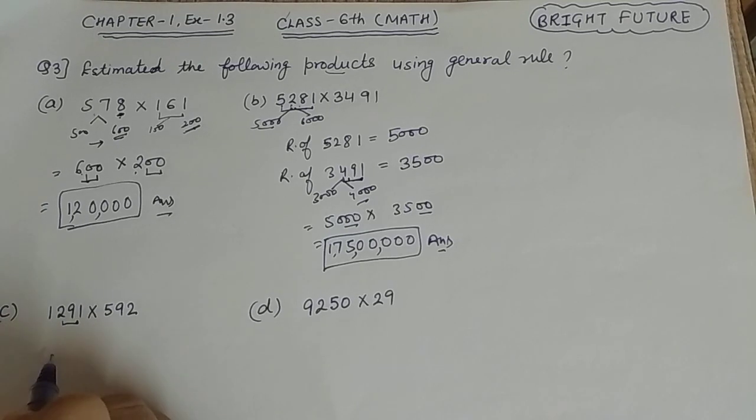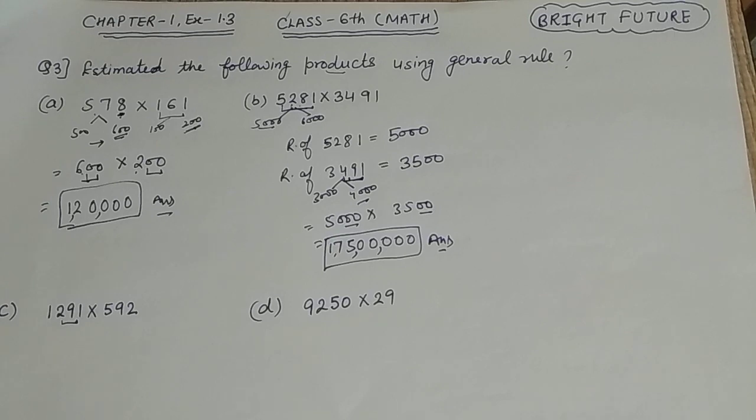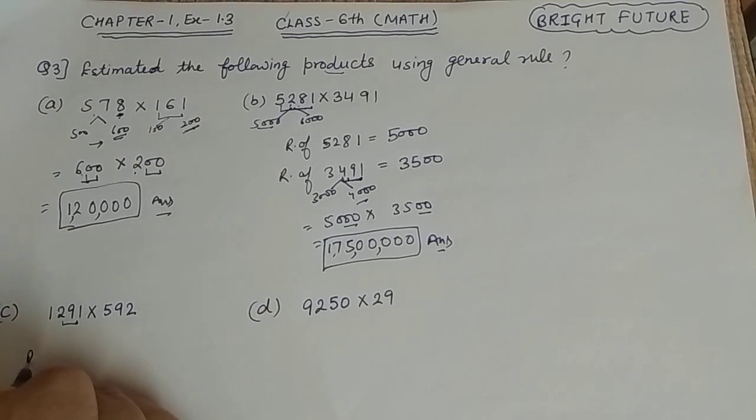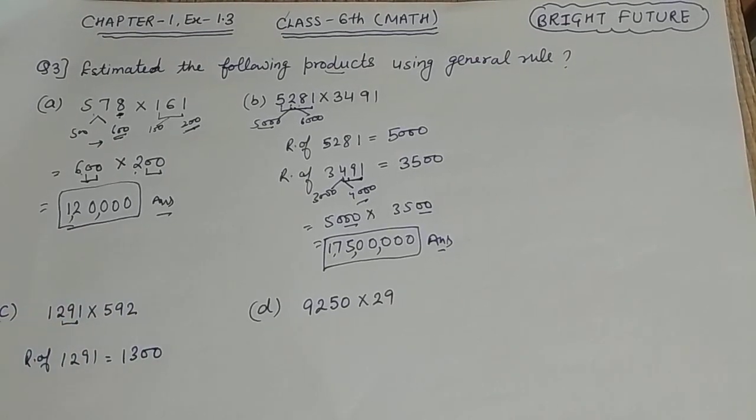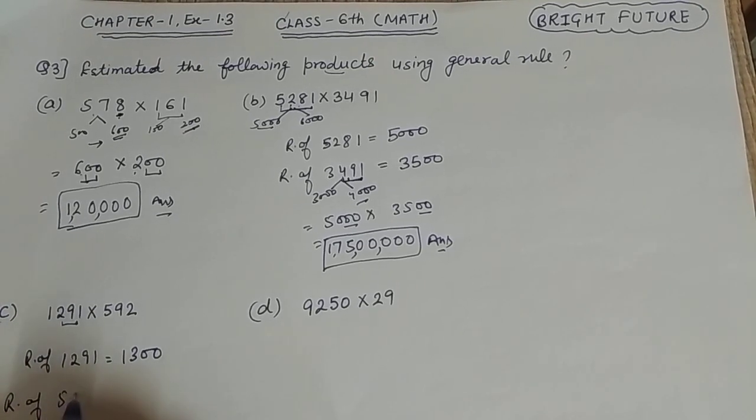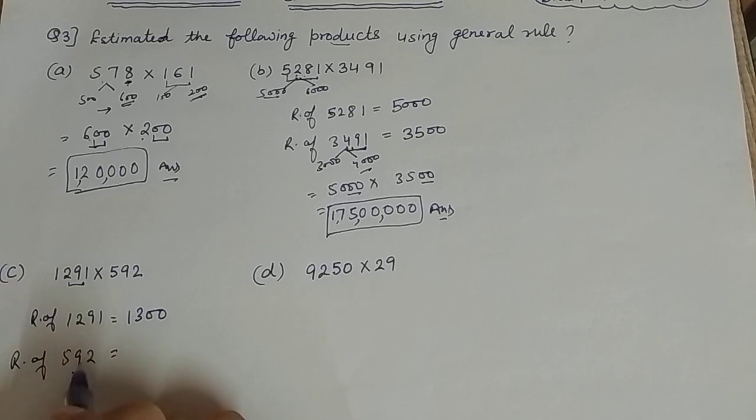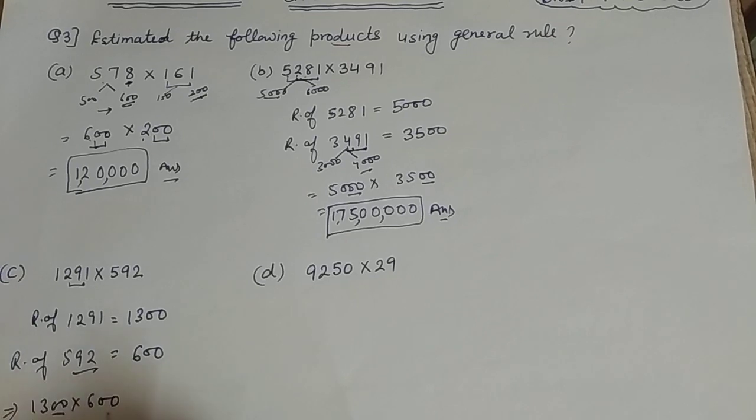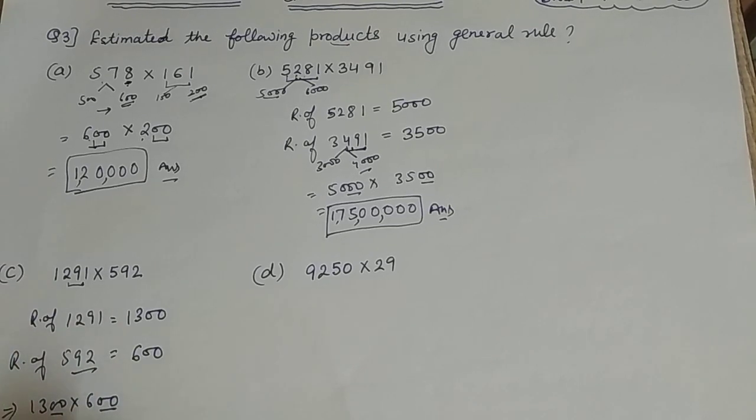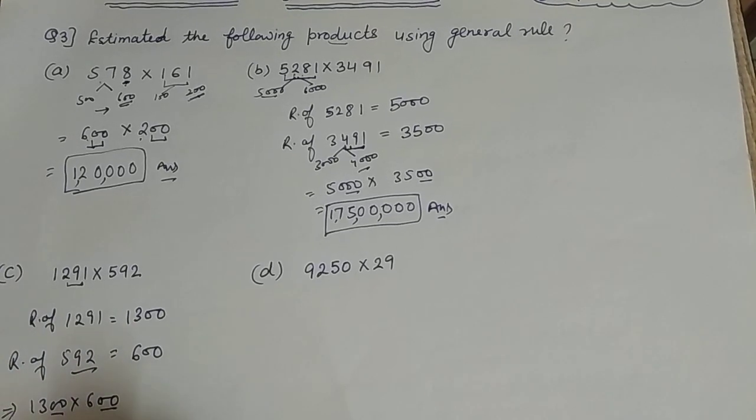If it's 291, it will be 200 or 300. This is our 300, so rounding off 1,291 is 1,300. Now round off 592 - it's 500 or 600. This is 92, so 600. Now we multiply 1,300 into 600. First count zeros - there are four zeros. Then 13 times 6 is 78. So this is our answer: 7,80,000. This is part C.